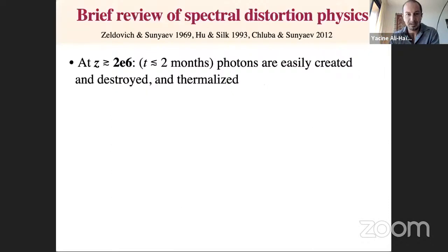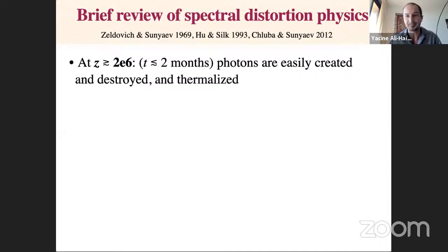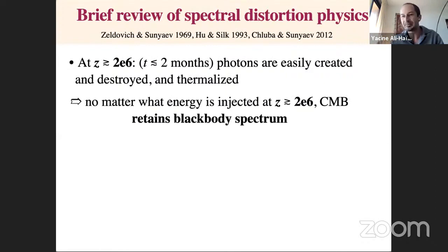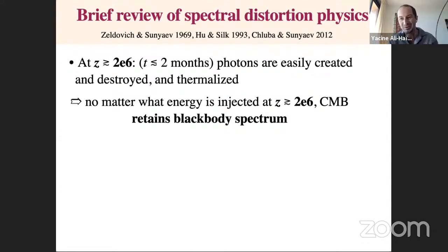At very high redshift — greater than about 2 million, corresponding to less than two months after the Big Bang — photons can be easily created and destroyed through double Compton scattering and bremsstrahlung. Photon number is not conserved. So no matter what energy is injected into the plasma at redshifts greater than 2 million, it will be quickly thermalized and the CMB retains a blackbody spectrum, possibly at a slightly different temperature.